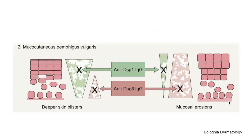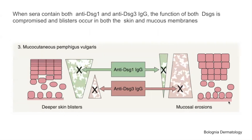In the mucocutaneous form of pemphigus vulgaris, autoantibodies are present against both DSG1 and DSG3. Therefore, all throughout the skin and all throughout the mucosal membrane, the DSG1 and DSG3 function is affected, and you get both deep skin blisters as well as mucosal erosions.